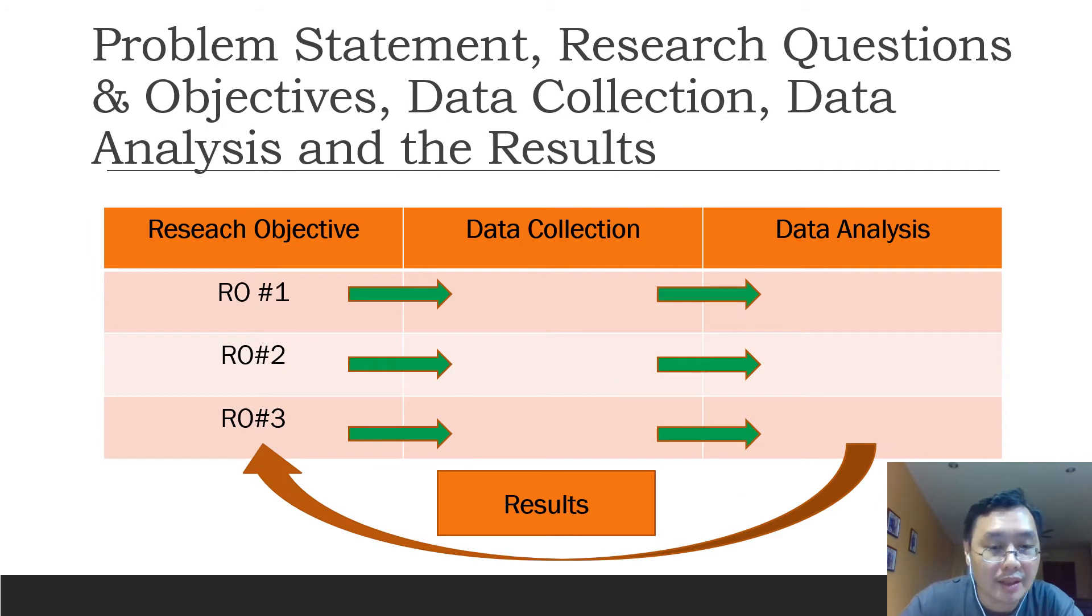Here is a table that I always find useful, especially if you are new to research. You can set up a table with your research objectives being listed out clearly. RO means research objective number one, number two, number three.